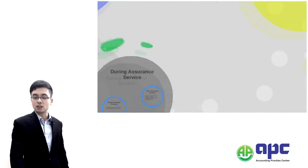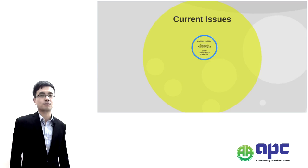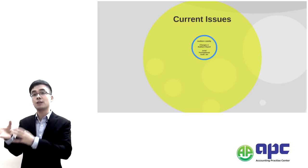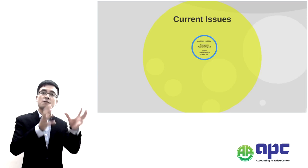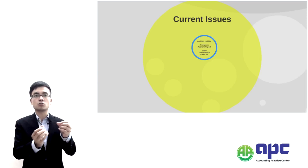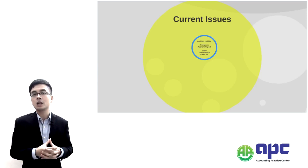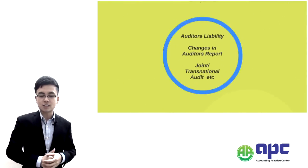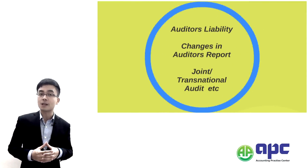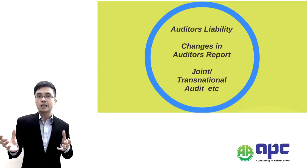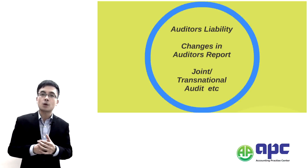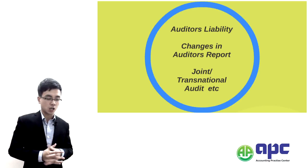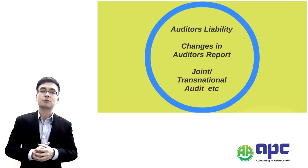Now let's come to the final chapter of our study: current issues. Current issues means topics that are very hot right now and will shape the future of auditing. Quite a lot of things to cover, for example, whether or not auditors should be liable in certain circumstances, changes in the auditor's report and whether those are good or bad, and joint transnational audits. That's chapter three of our study.